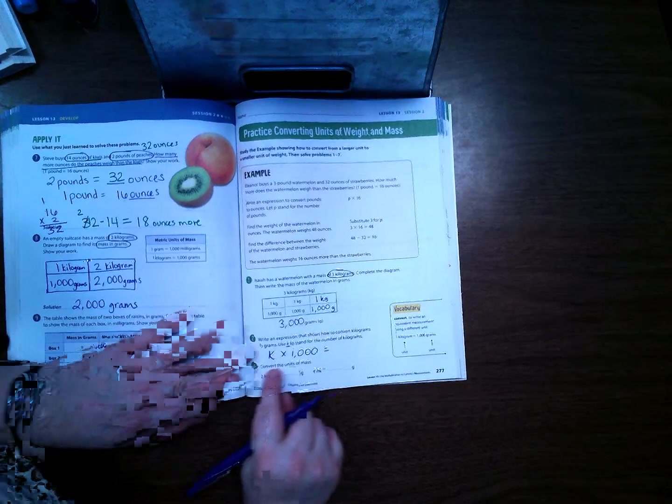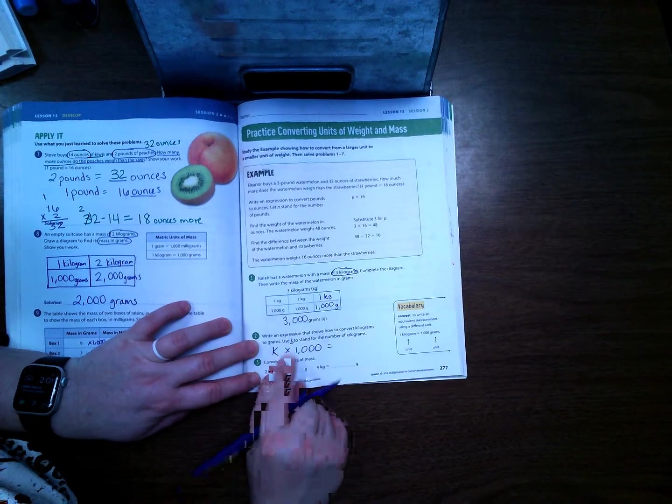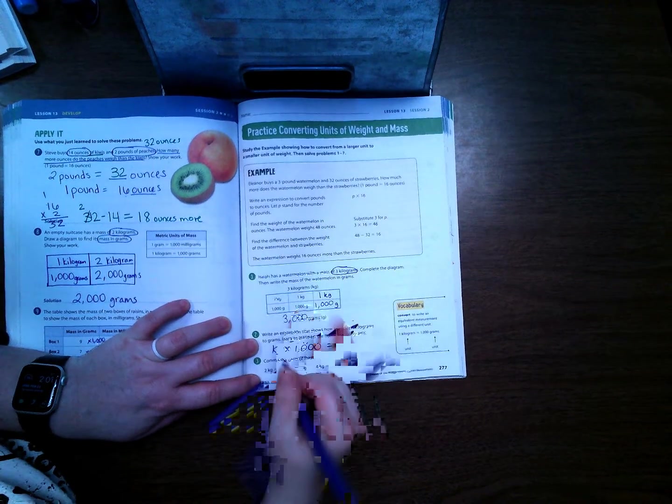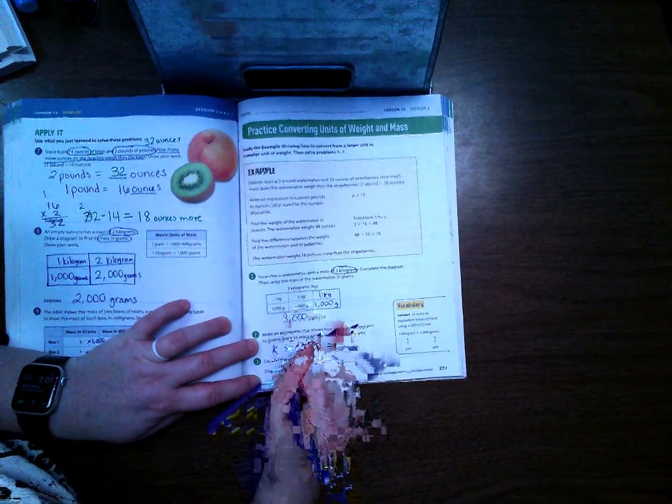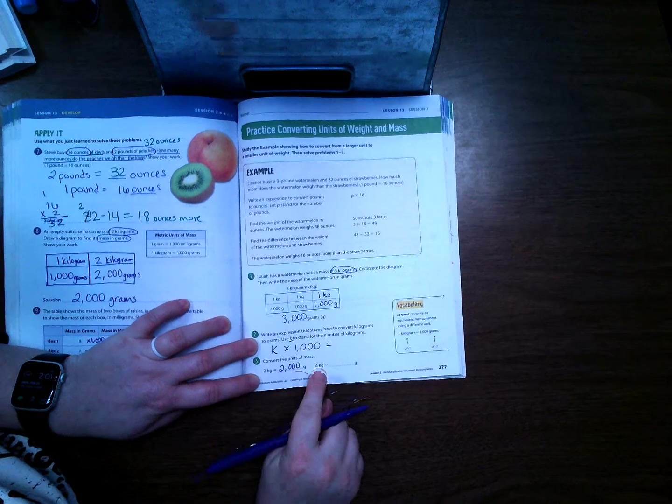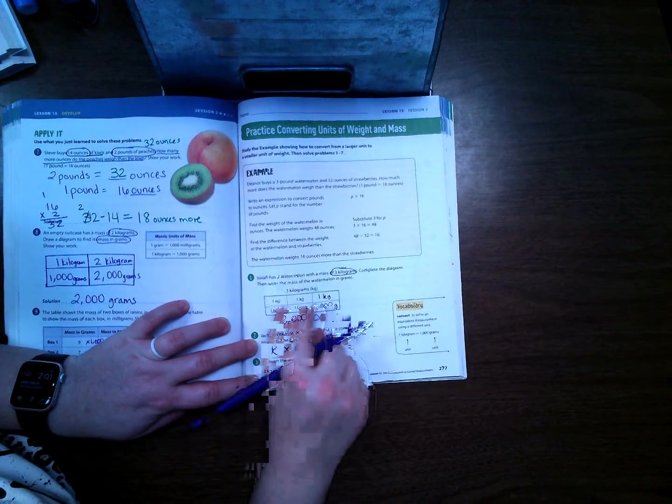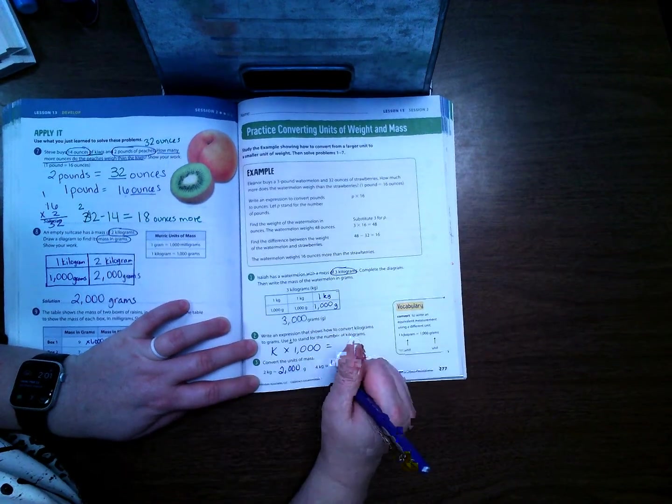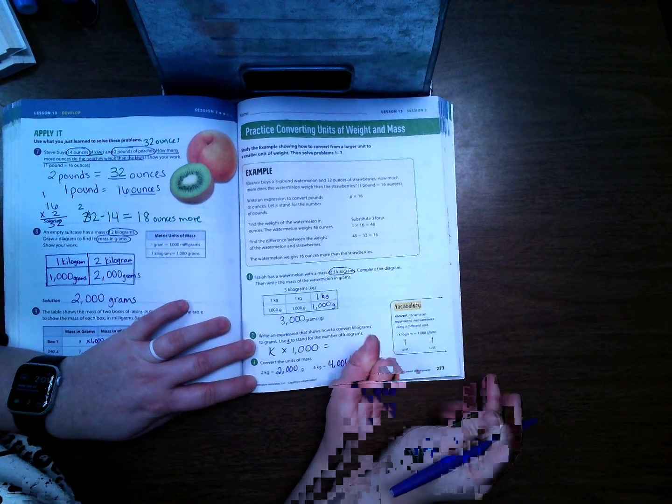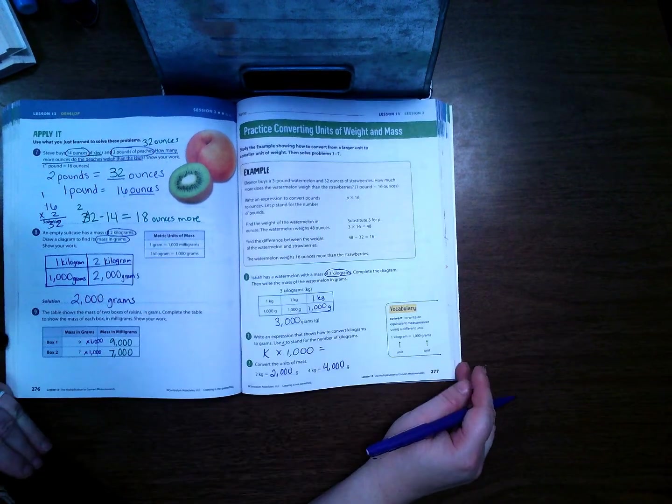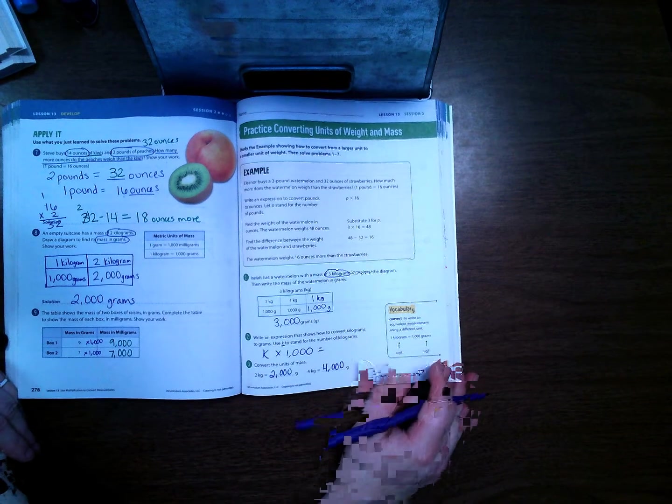Convert the units of mass. If we have 2 kilograms, then we're going to have 2,000 grams. If we have 4 kilograms, we're going to have 4,000 grams. Let's take a look at page 278.